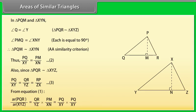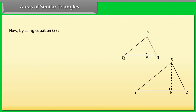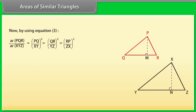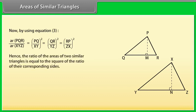From equation 1, area of triangle PQR upon area of triangle XYZ = (QR/YZ) × (PM/XN). Using equations 2 and 3, this becomes (PQ/XY)². Therefore, area of triangle PQR upon area of triangle XYZ = (PQ/XY)² = (QR/YZ)² = (RP/ZX)².